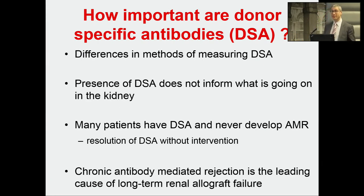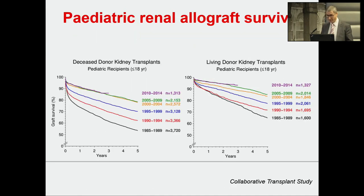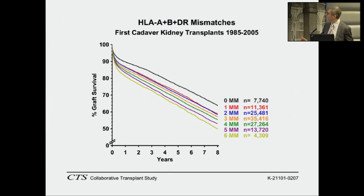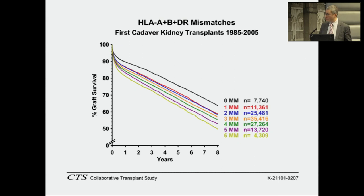We can see resolution of these antibodies without doing anything. However, chronic antibody-mediated rejection is the leading cause of long-term renal allograft failure. The collaborative transplant study in paediatrics shows we're getting much better at transplants — they are lasting much longer — but matching is important. Getting a well-matched first graft reduces the chance of early graft loss. A poorly matched living donor kidney is probably still better than a well-matched deceased donor kidney.